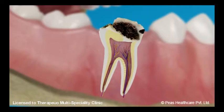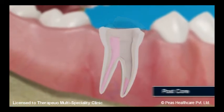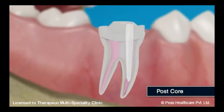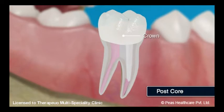In case the tooth gets further destroyed, it may be necessary to build up the tooth and provide more support from the root part of the tooth with a procedure called a post-core, subsequent to which the final restoration or crown is placed.